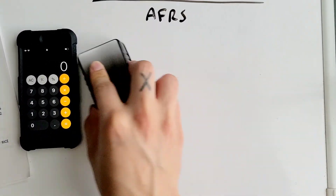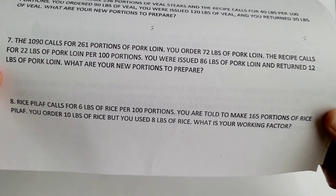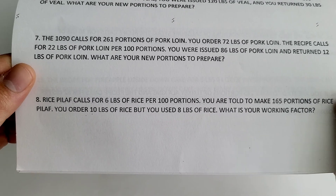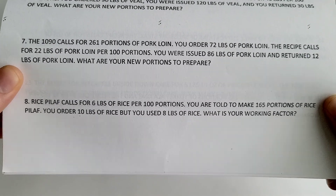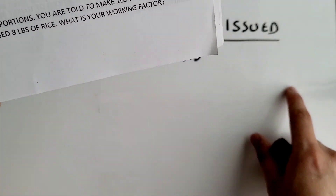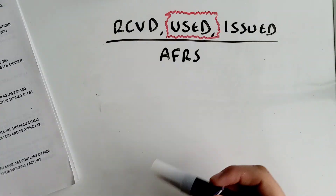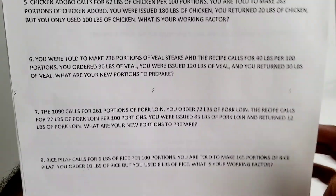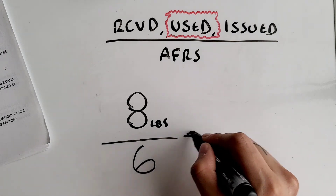Moving on to number eight. Rice pilaf calls for six pounds of rice per 100 portions. You're told to make 165 portions of rice pilaf. You ordered 10 pounds of rice but used eight pounds. What is your working factor? This one is simpler — it doesn't have any numbers to throw you off. You actually used eight pounds, so that's your top number. Eight over your AFRS: the recipe calls for six pounds of rice per 100 portions, so put the six at the bottom.